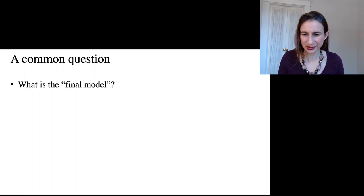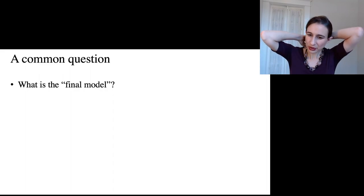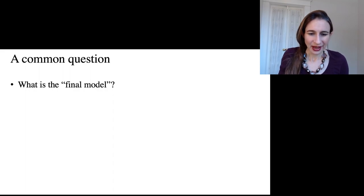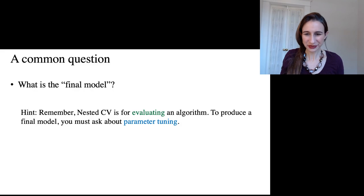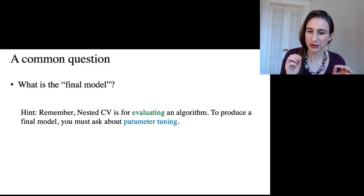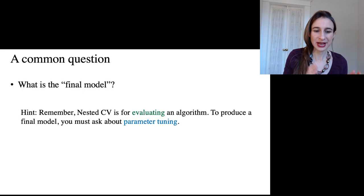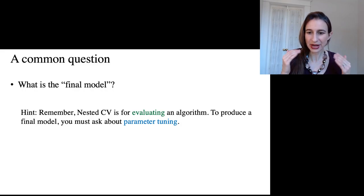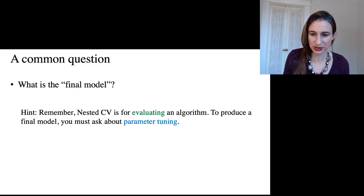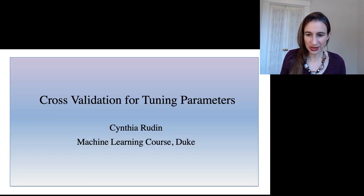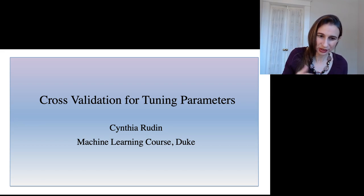A lot of students ask: what is the final model after going through this whole nested cross-validation procedure? The answer is that you have to remember cross-validation has multiple meanings. When you ask about the final model, what you're really asking is what's the right parameter to use. Nested cross-validation is for evaluating an algorithm including the parameter tuning — but to produce a final model, you have to go back and think about parameter tuning separately, referencing the lecture about tuning parameters.